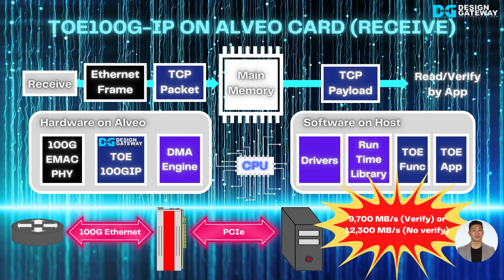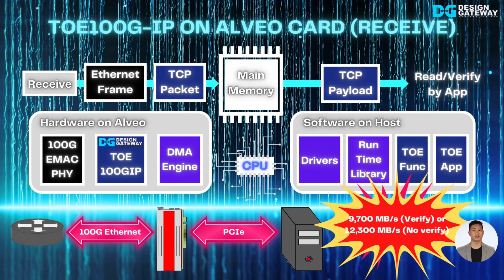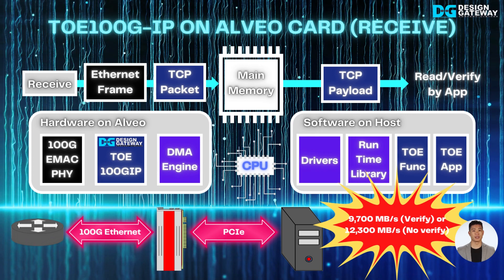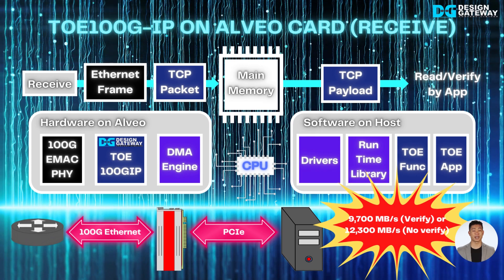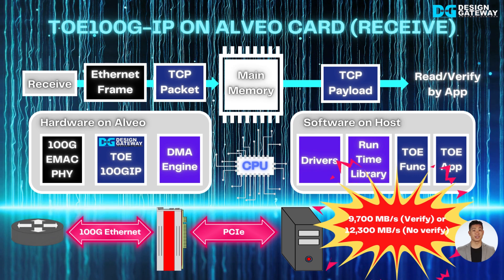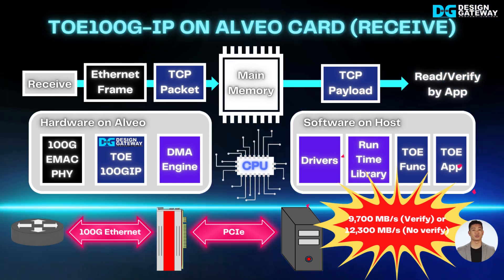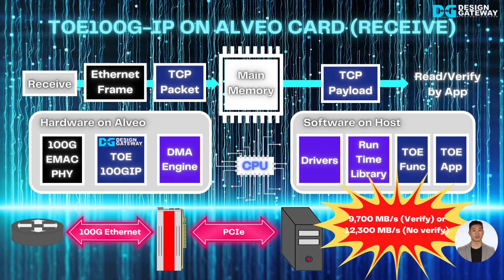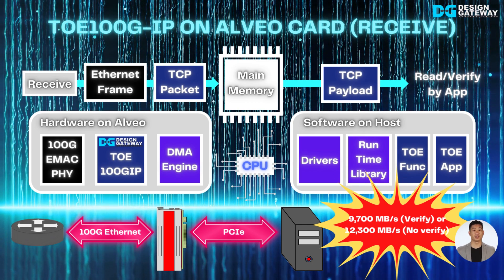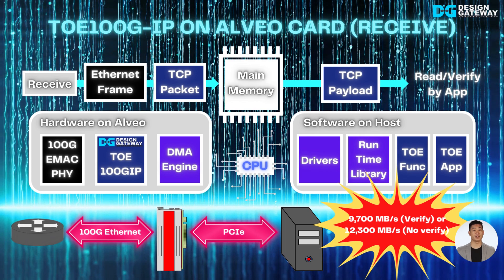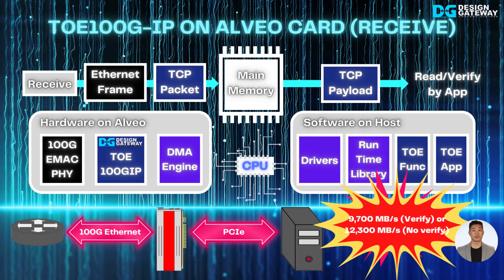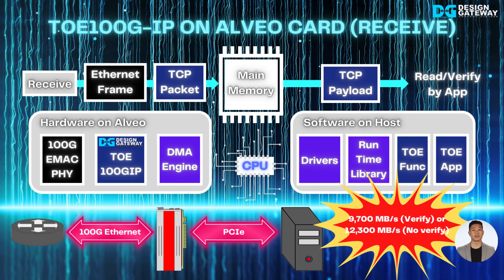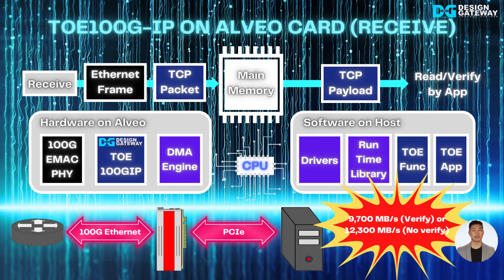In the receive process, the data flow is inversed. TOE100G IP receives and extracts the TCP payload from the Ethernet frame and transfers it to the DMA engine. Next, the DMA engine uploads the data to the main memory and asserts a signal to the TOE application that new data has arrived. The TOE application reads the data from the main memory and verifies it. Similar to the send process, the performance is about 9,700 MB per second when the application verifies the received data. Without data verification, the application shows peak performance at 12,300 MB per second.